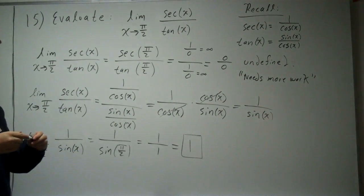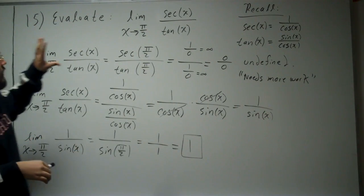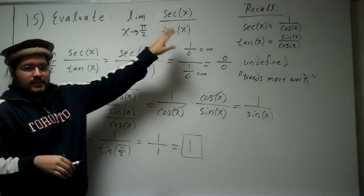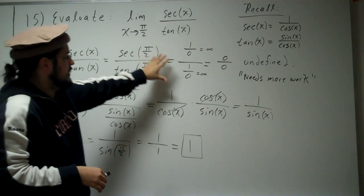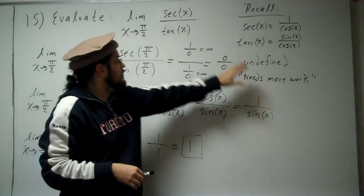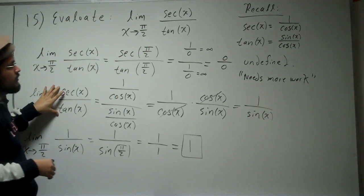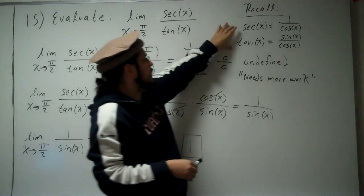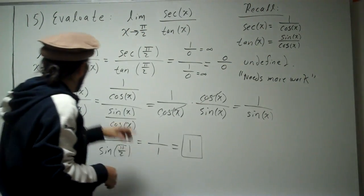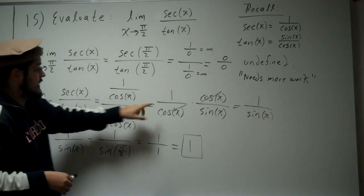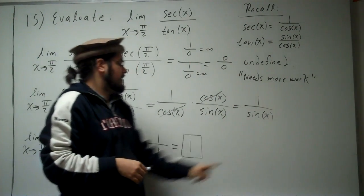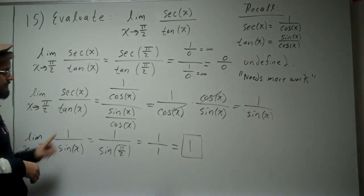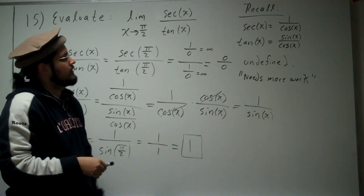Okay, so to recap, always go ahead and plug it in first, see if it works. If it doesn't work, that means you need more work. So come back to it and try to do some algebra. In this case, we recalled some identities here, and we went ahead and substituted them. And it came out nice. We got 1 over sine x. We took the limit of that, and we got 1.